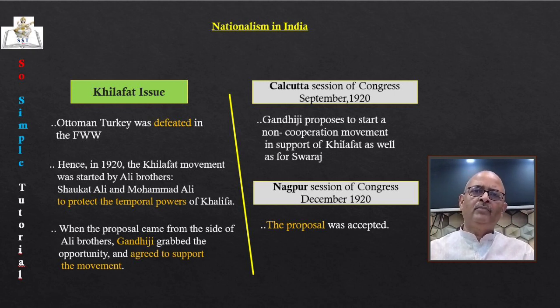The war led to a huge rise in defense expenditure, financed by war loans. Fighting a war needs a lot of money — to buy weapons, ammunition, vehicles, war equipment, food and uniforms for soldiers. The British government was forced to borrow heavily, and Indians made a significant contribution to the coffers of the British government.